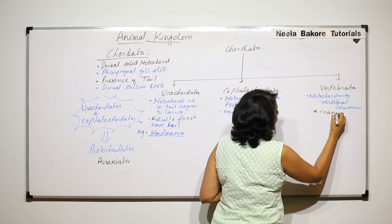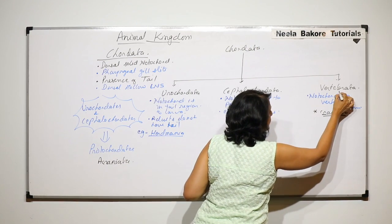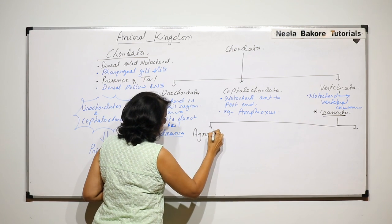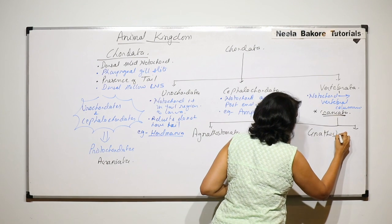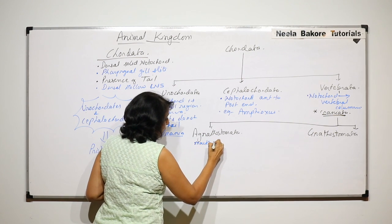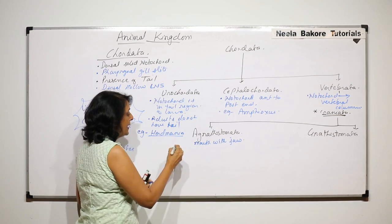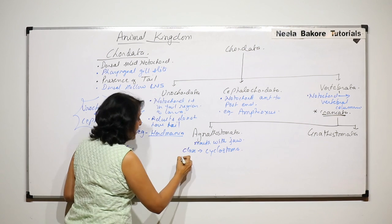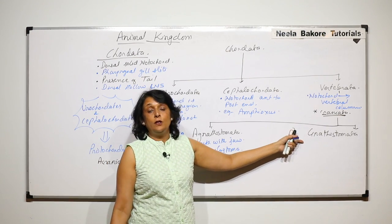Vertebrata is also known as Craniata because the brain box is present. Now this Vertebrata is further divided into two categories: Agnathostomata and Gnathostomata. Agnathostomata includes mouth without jaw. There is only one class in this, that class is Cyclostomata. The example is Petromyzon.